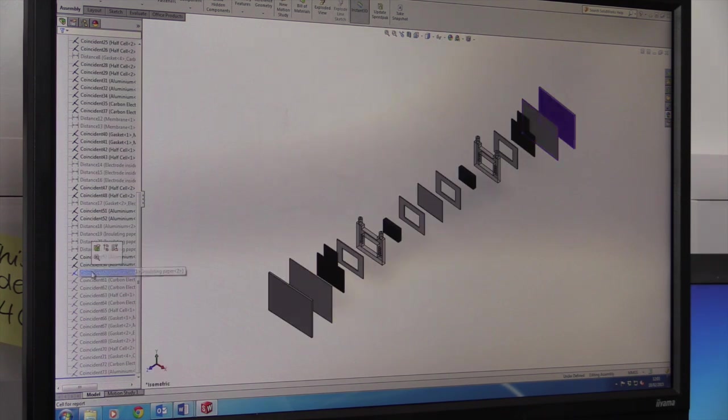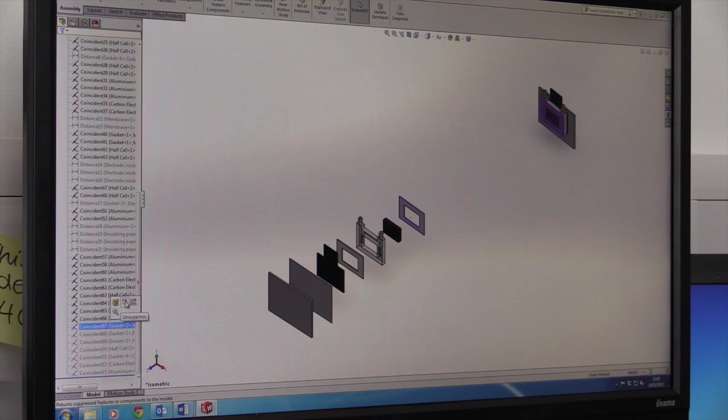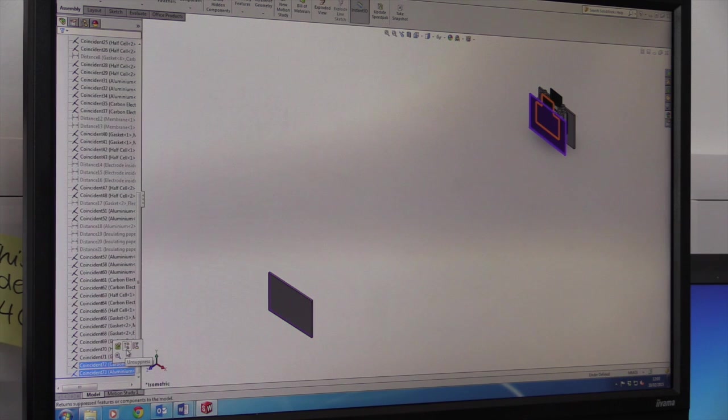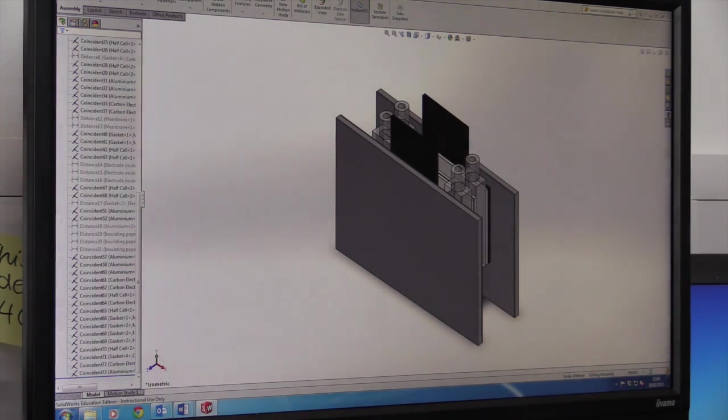SolidWorks was used throughout the project. SolidWorks is a computer-aided design program. Using computer-aided design speeds up the design process by making it quick and easy to modify ideas before production starts. In this case, we used SolidWorks to design each component within the cell.